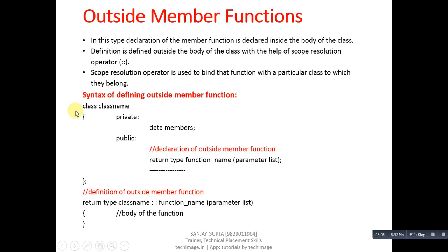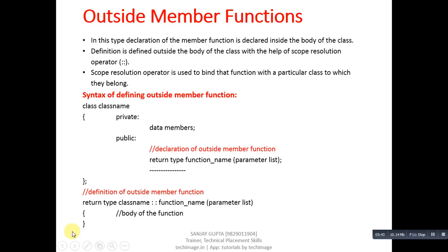Now for the syntax of outside member functions: inside the class, you have the declaration — return type, function name, and parameter list as a one-line statement. Then after the class definition, the function definition is written outside using the scope resolution operator. The definition includes the return type, the name of the class, then the scope resolution operator, then the function name and parameter list. You must use the class name along with the scope resolution operator to relate the function to its class.